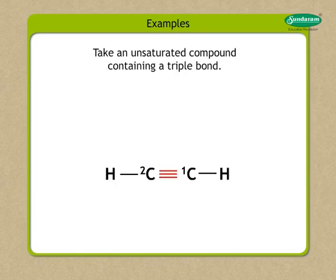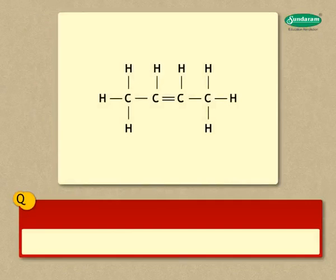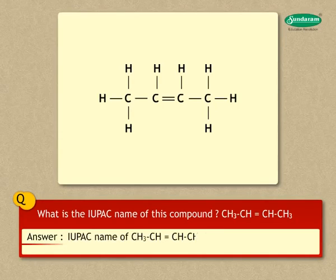For an unsaturated compound containing a triple bond, the same rules as for double bonds are followed, with the suffix changed from '-ene' to '-yne'. Question: What is the IUPAC name of the compound CH₃-CH=CH-CH₃? Answer: The IUPAC name of this compound is but-2-ene.